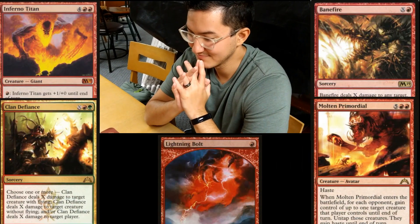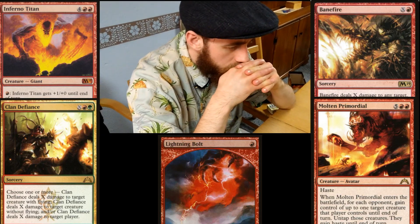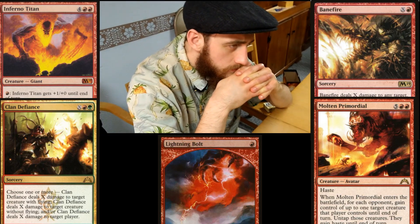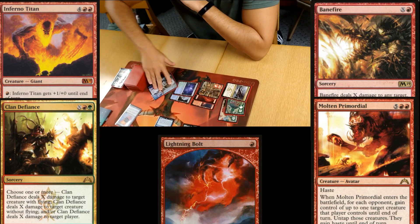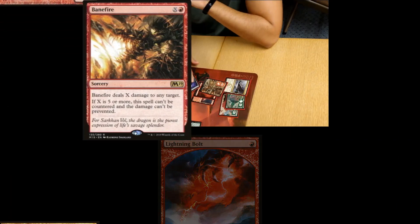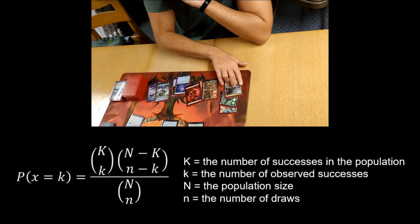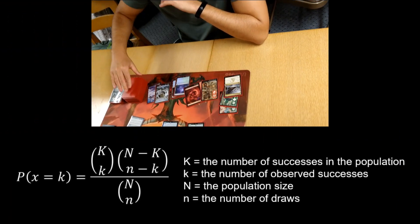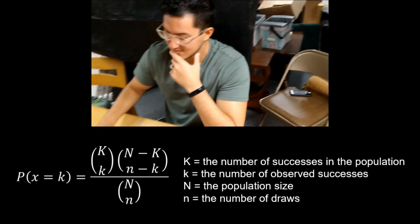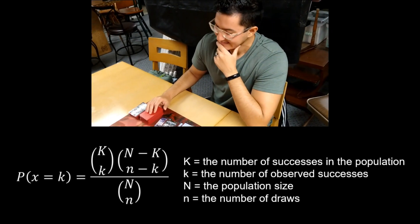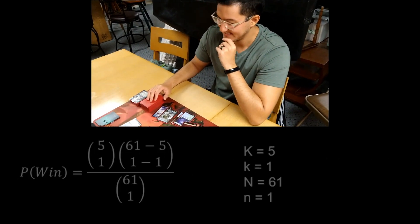Mark has five cards in his deck that will win him the game if he draws any one of them. Mark, knowing his position, starts running the numbers. He knows what he needs, and that it is the hypergeometric distribution that will answer his question: what is the probability that I draw a card that wins me the game?